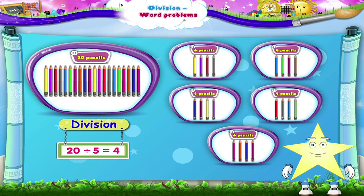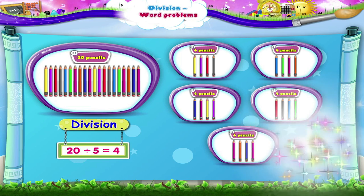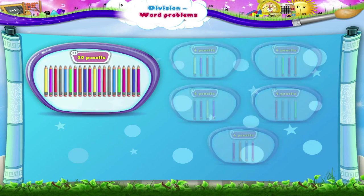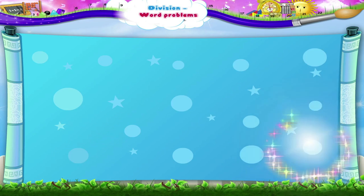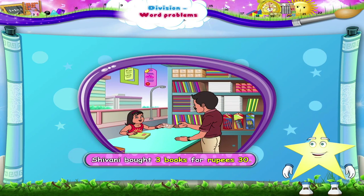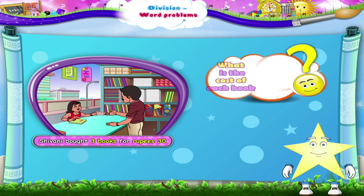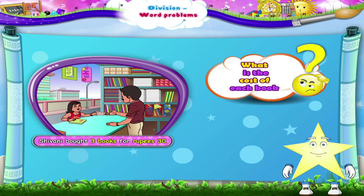We can solve a lot of such examples using division. Let's try some now. Shivani bought 3 books for Rs. 30. What is the cost of each book?